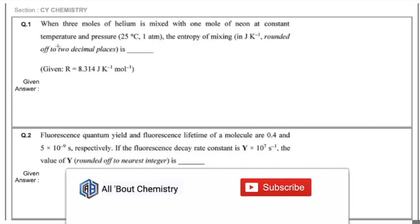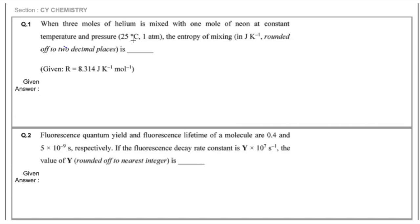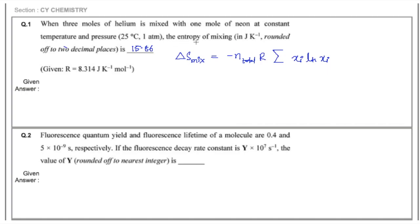The first question was asked for one mark: when three moles of helium is mixed with one mole of neon at constant temperature and pressure, the entropy of mixing is how much, answered to two decimal places. The formula used is delta S of mixing equals minus n_total times R times sigma of x_i ln(x_i), where x_i is the mole fraction. Solving with three moles He and one mole Ne, the answer comes out around 15.86.